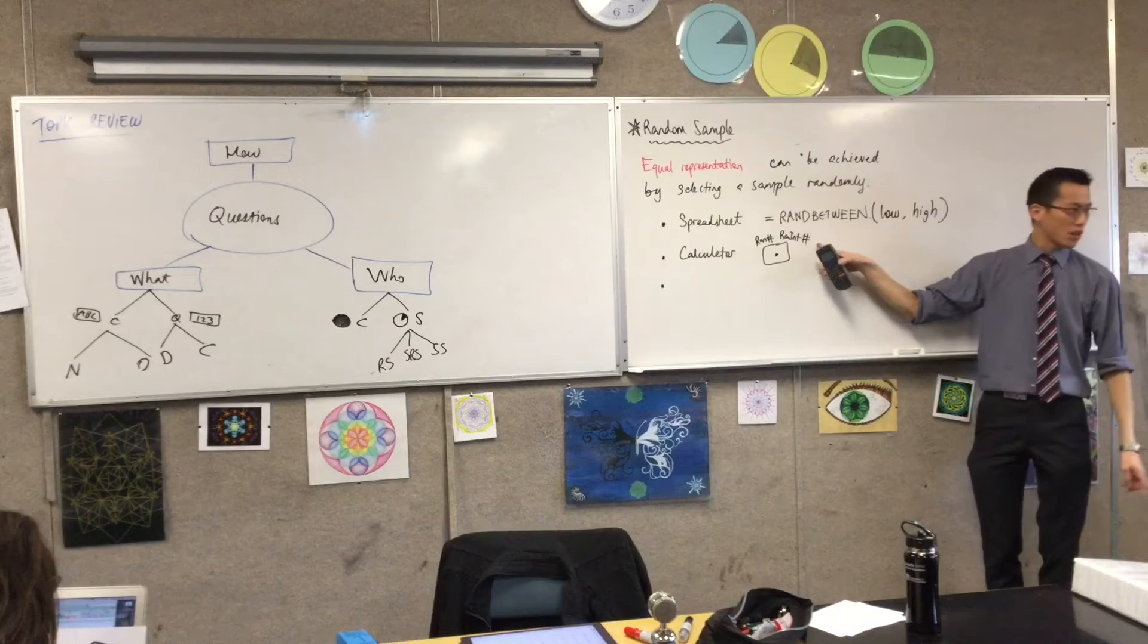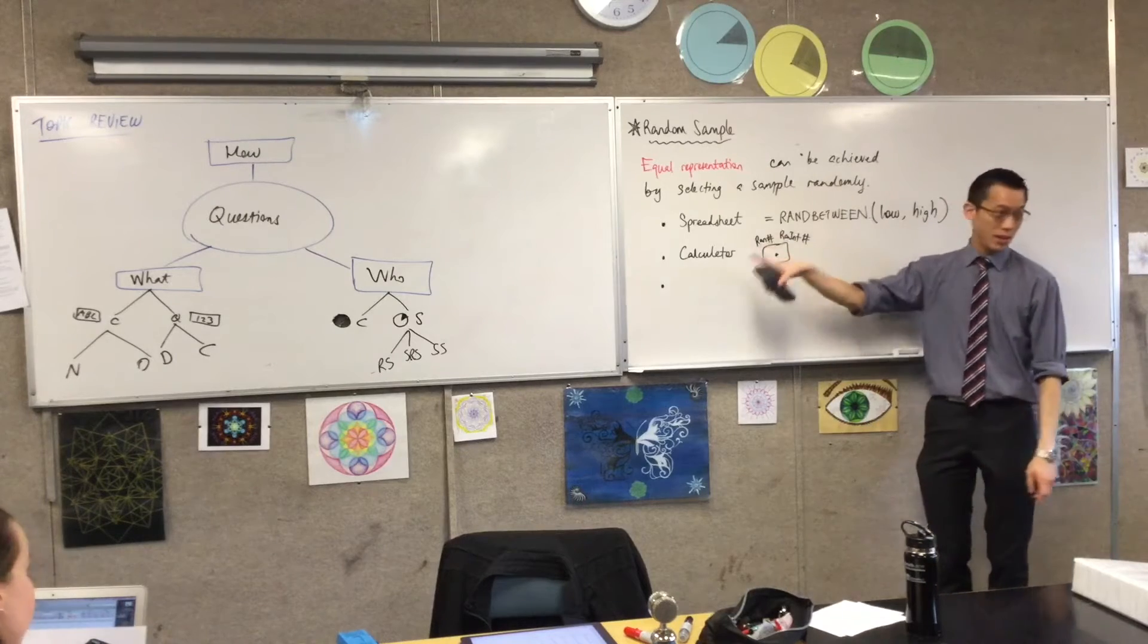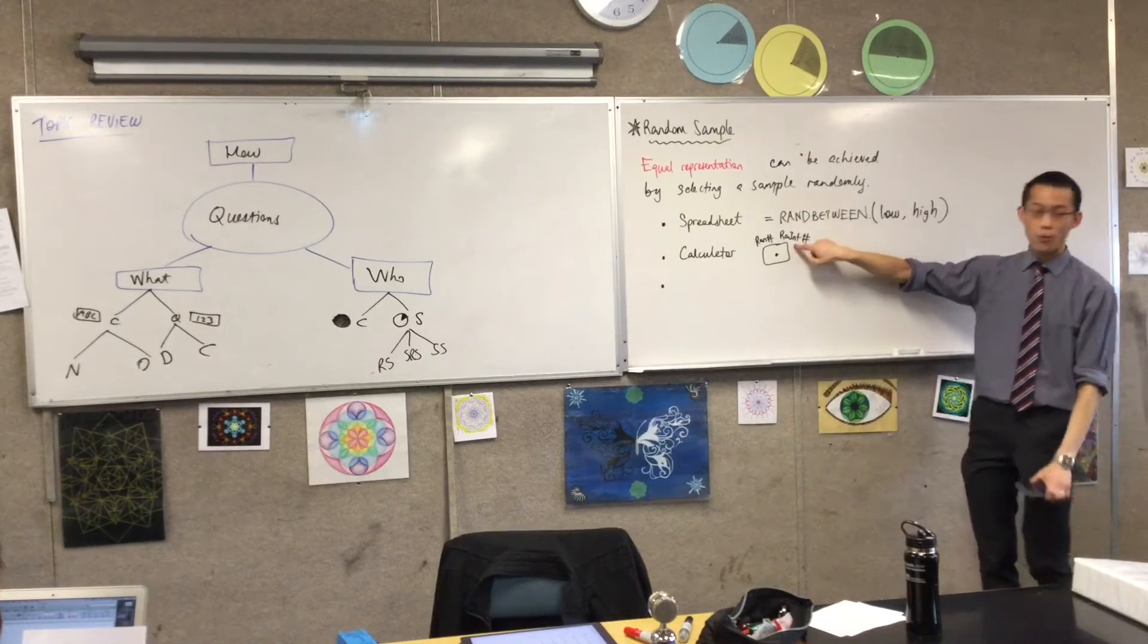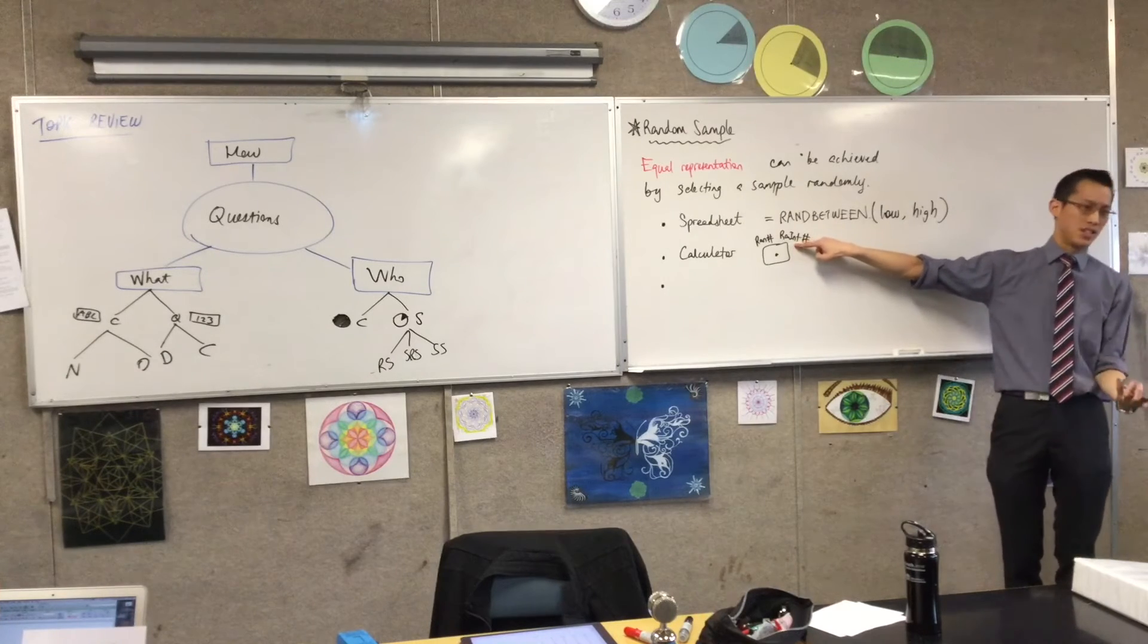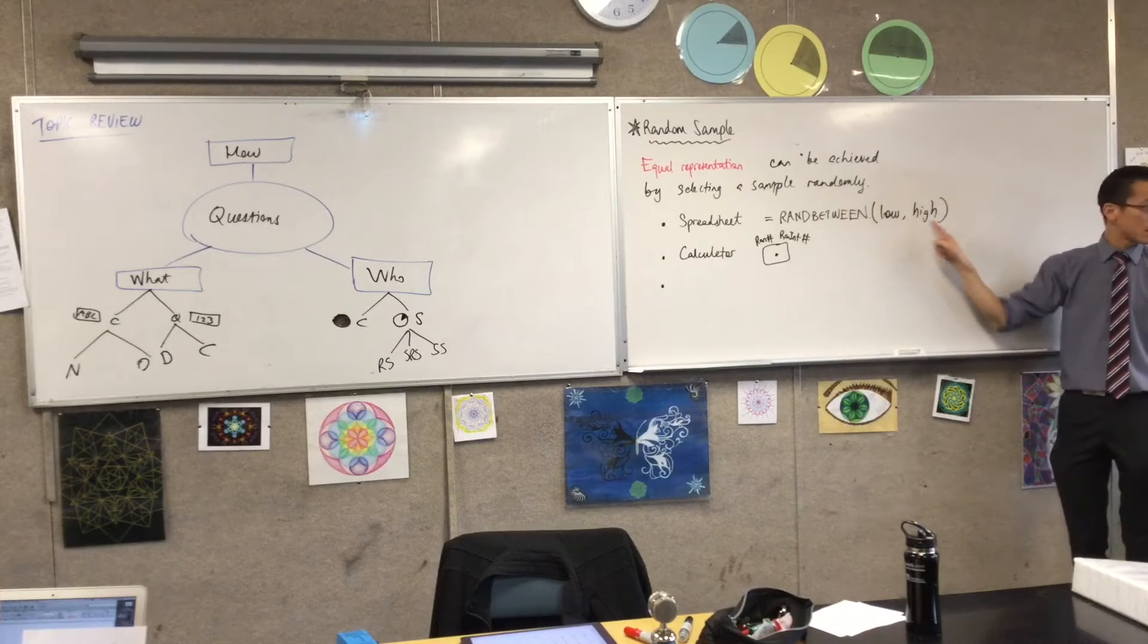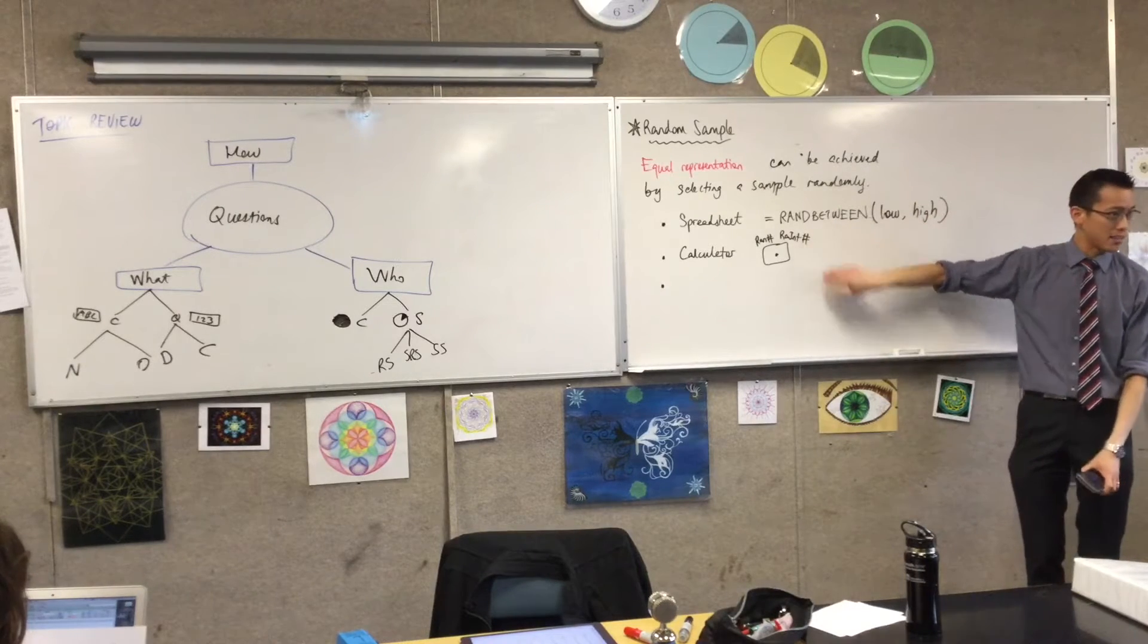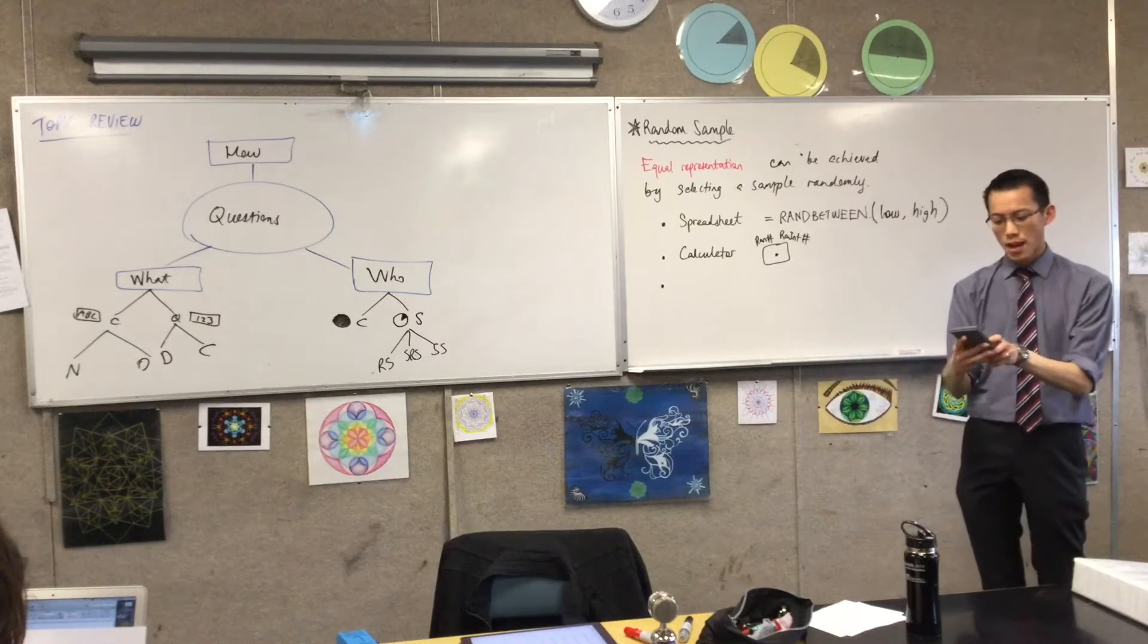But what we want is this one on the right-hand side. The difference between these is this will give you a random number between 0 and 1. This will give you a random whole number, an integer, between, just like this, any two numbers you choose. So I'm going to go with this one on the right-hand side, and if you have something slightly different, I'll show you how to work with that.